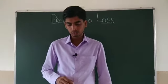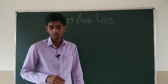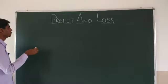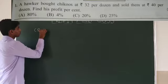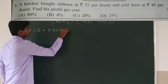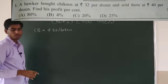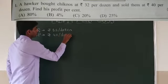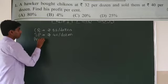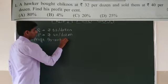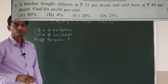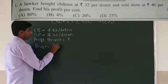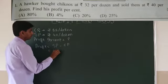First question: a hawker bought chikus at Rs 32 per dozen and sold them at Rs 40 per dozen. The cost price of chikus is Rs 32 per dozen and the selling price is Rs 40 per dozen. We have to find the profit percent. To find profit percent, first find the profit. The formula is: profit equals selling price minus cost price. Selling price is Rs 40 and cost price is Rs 32.